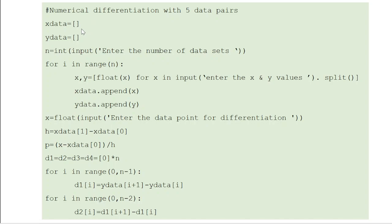First, create empty lists for x and y data. Input the number of data sets as n — here n = 5, which is fixed. Use a for loop with n iterations and the split function to input x and y values simultaneously, appending each to the x and y data lists. Then input the x value at which you want to perform differentiation. Find the step size h as the difference between x₁ and x₀, and compute p = (x − x₀)/h. Then initialize difference arrays d1, d2, d3, d4 as lists of zeros for the first through fourth differences.